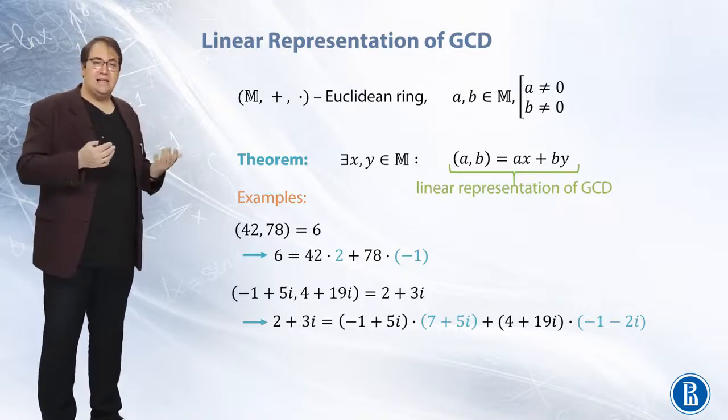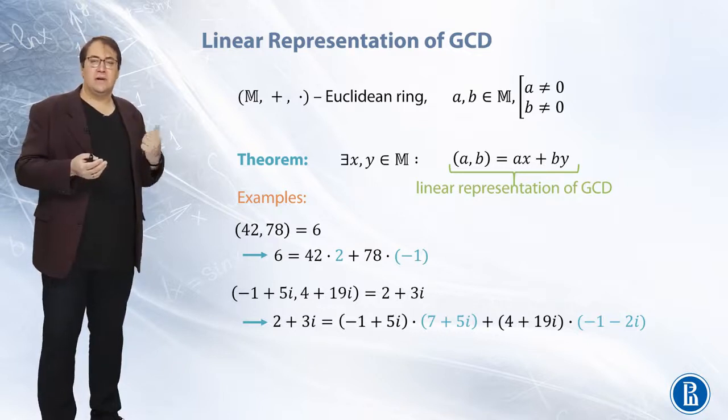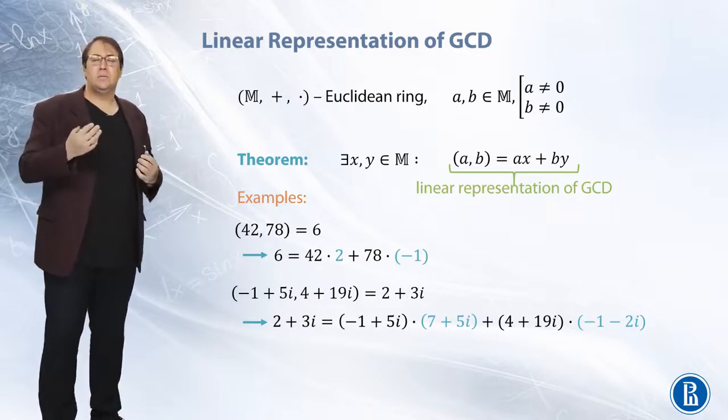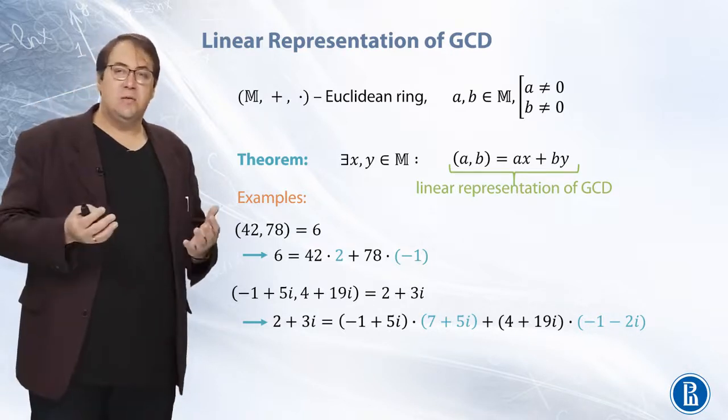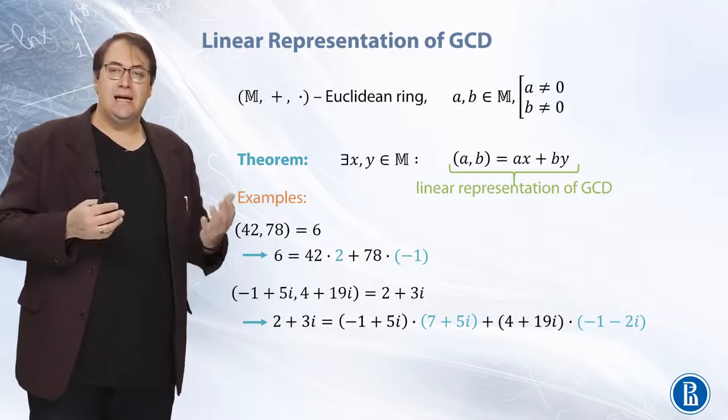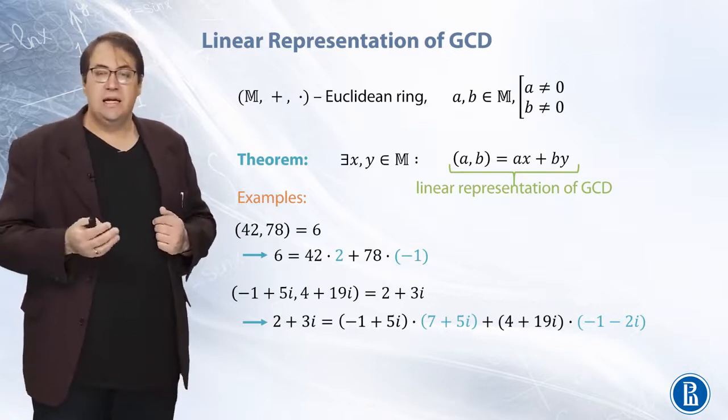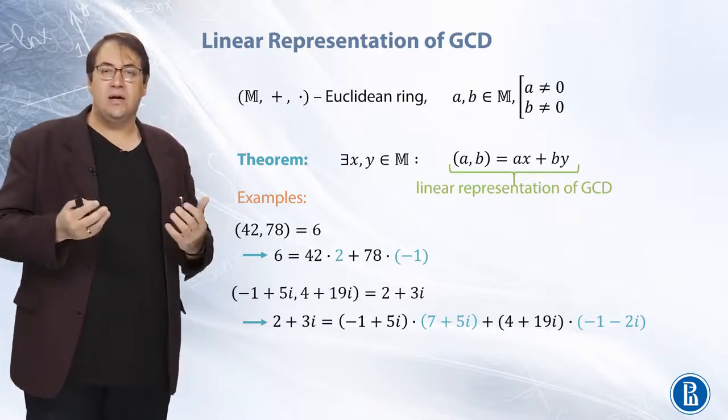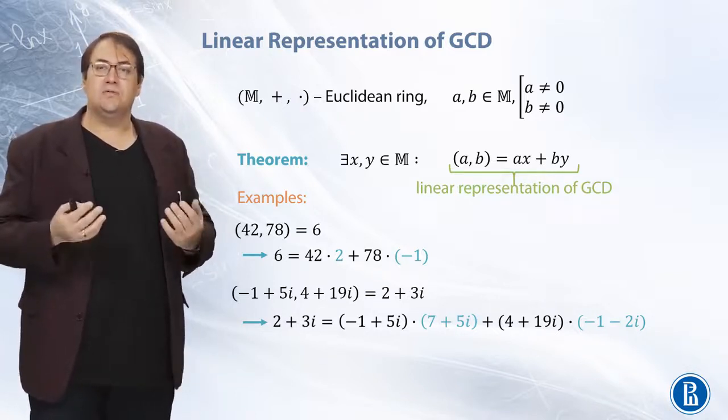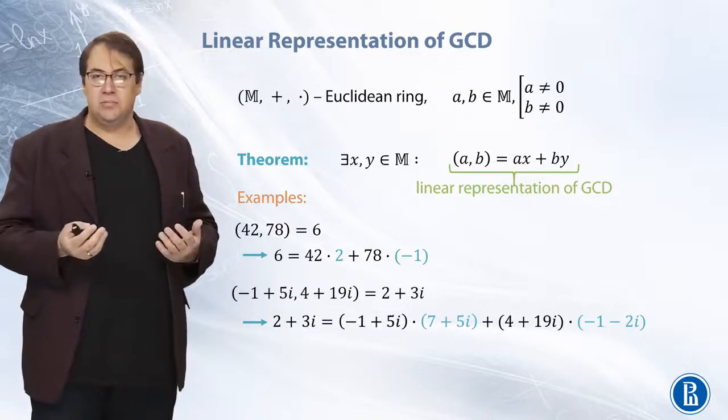x here is 7 plus 5i and y is minus 1 minus 2i such that the greatest common divisor is equal to ax plus by. So the theorem states that such x and y always exist for any pair a and b.